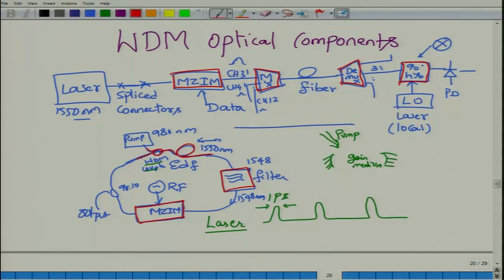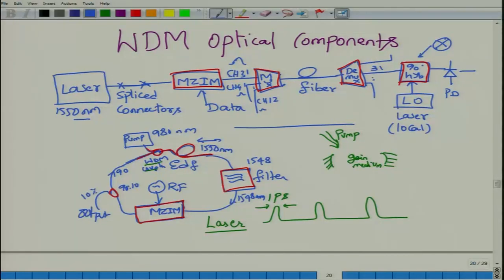After modulating the loss and essentially creating a lasing pulse, you tap a portion of the output using a tap coupler or output coupler. This coupler is accompanied by a 90-to-10 ratio, meaning 90 percent of the power goes through and 10 percent comes out. This is an example of using multiple WDM components to realize a very interesting optical system.